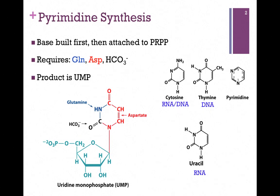To form UMP, we need the amino acid glutamine, which donates the amine group here, aspartate donates a good portion of the cyclic ring structure here, and then we have the carbonyl that comes from bicarbonate. You'll need to remember which amino acids contribute to the formation of UMP. You'll notice in this case, instead of forming an intermediate, this is actually one of our pyrimidine nucleotides, UMP.